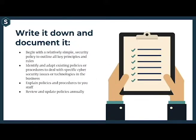The next step is to write down and document it. The only way employees will know for sure how to conduct themselves and what they are responsible for is if you document it. This can be done through a set of policies and procedures. A security policy is a document that outlines exactly what employees can or cannot do with respect to technology. These policies can cover everything from internet use to social media, email, or acceptable use. An acceptable use policy might state something like: you may not connect a personal computer to a business network, or when accessing the business network from home, you must use a virtual private network.